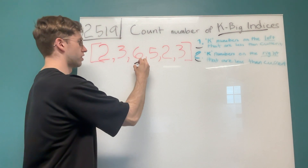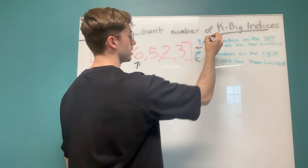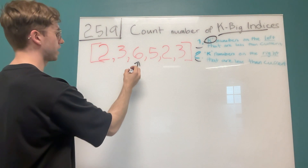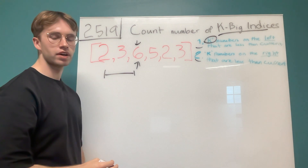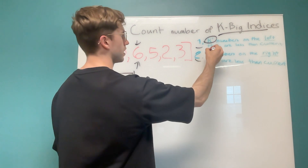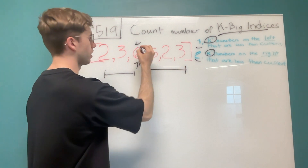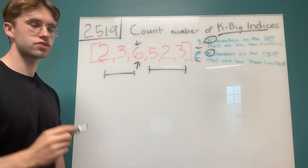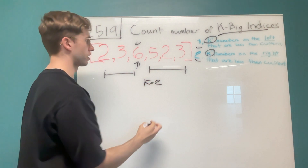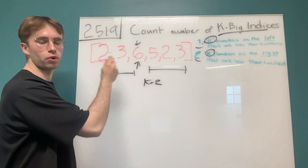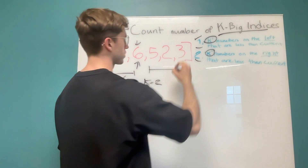Say we're looking at the number six. We want to see that there's at least k numbers on the left-hand side that are less than this current number. In this example, k is equal to two. We can see on the left-hand side, both two and three are less than six, so that validates the first condition.